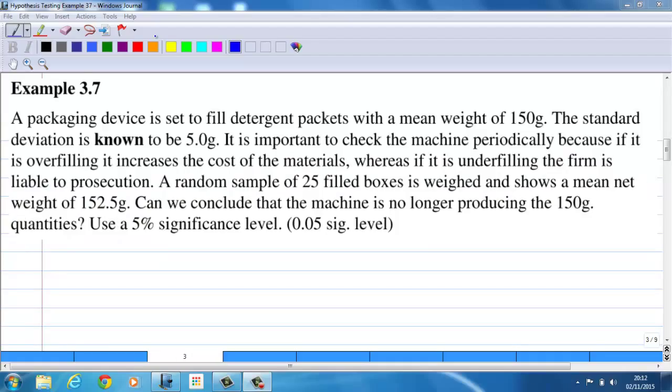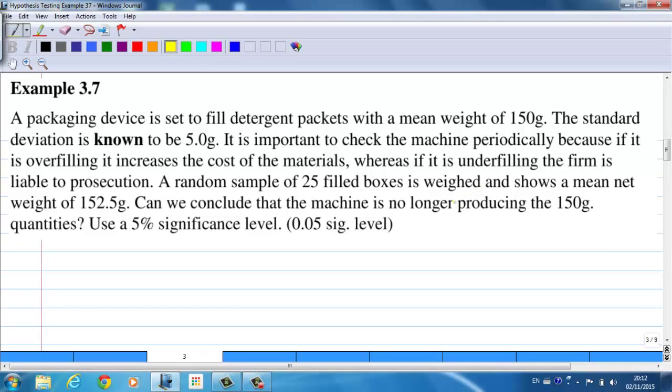Let's look at the information provided. We are trying to test whether the machine really produces detergent packets with 150 grams. So our question is mu equal to 150 grams. And we know that the standard deviation, which is sigma, is known to be 5 grams.